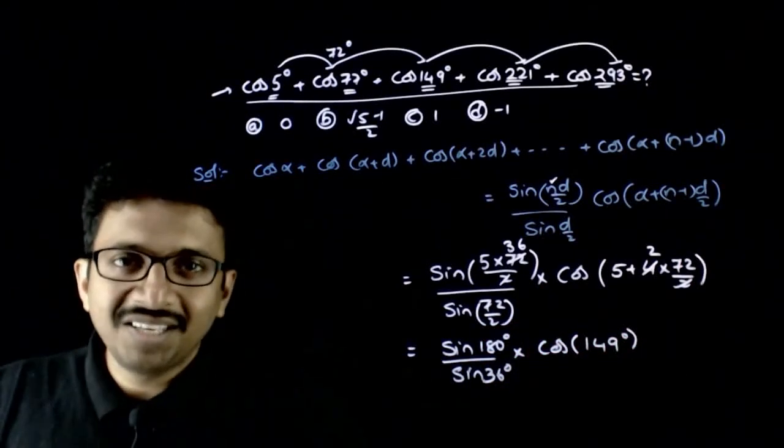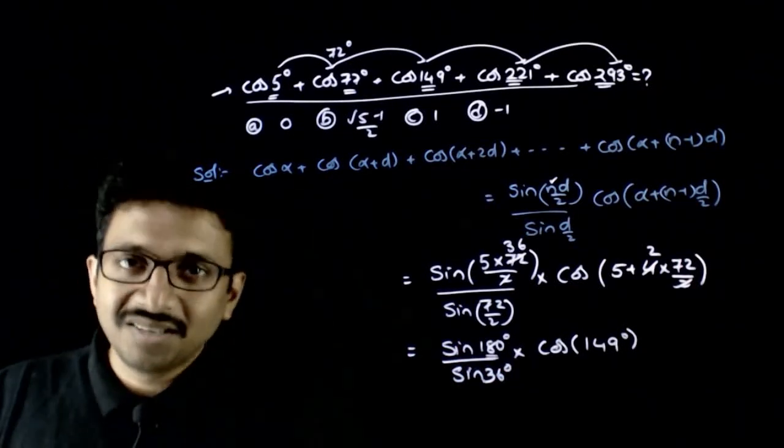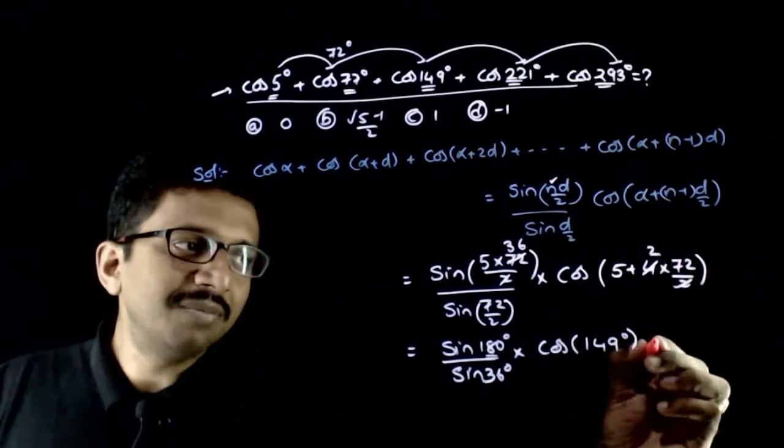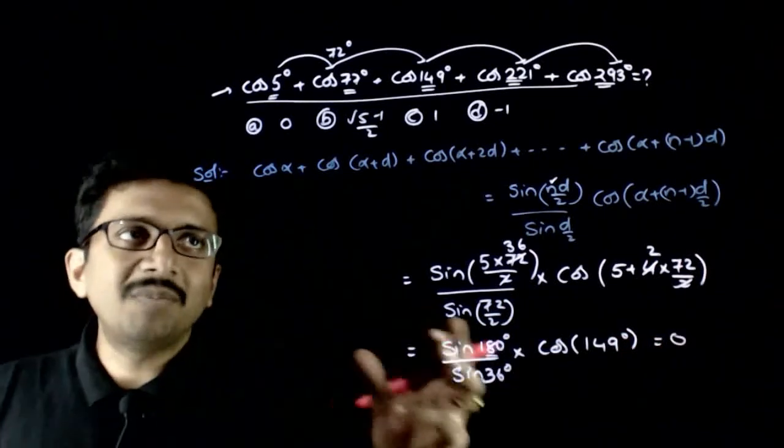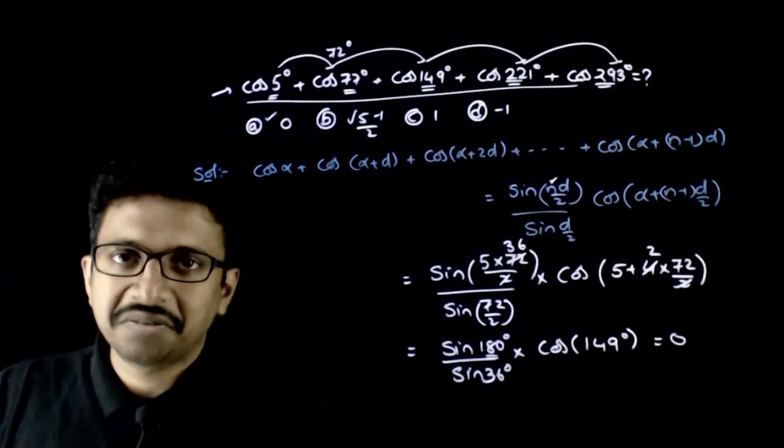You should have very clearly seen that you have 180 degrees here. Sin 180 degrees is 0. Hence, 0 times anything becomes 0. Hence, the summation of the sequence is 0. Option A is the right answer. Thank you.